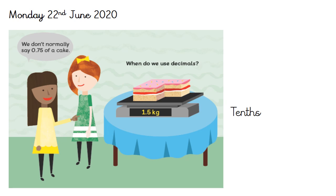Good morning everyone, welcome to another week of home learning. We finished our fractions unit last week, which flows nicely into our next topic: decimals. Have a look at this image — it says we don't normally say 0.75 of a cake. When do we use decimals? If you see here, there is a cake on some scales and we can see that it weighs 1.5 kilograms.